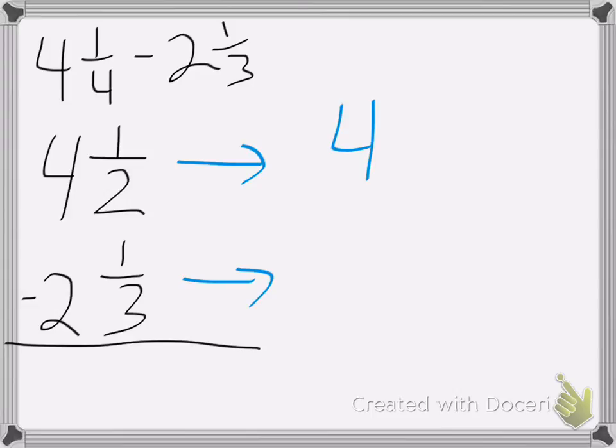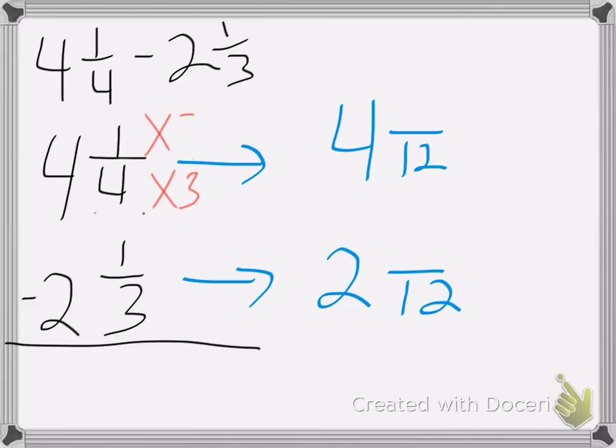So I'm going to get 4 with a fraction of 12. And 2 with a fraction of 12. 2 times... Oh, put the wrong number in for that one. It's 4. 4 times 3 is 12. So I ended up with 4. So I need to times the top by 3. 4 and 3 twelfths.